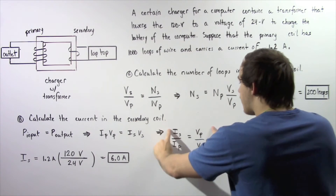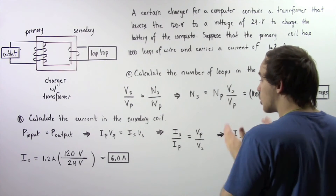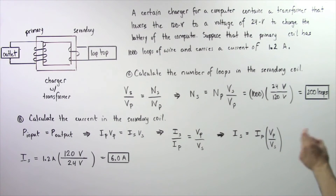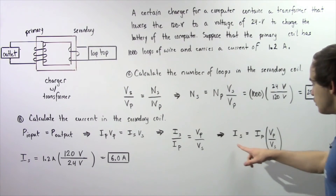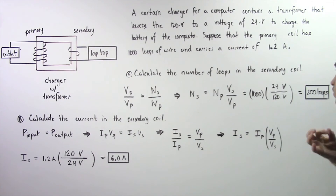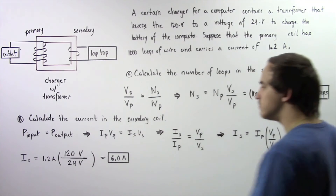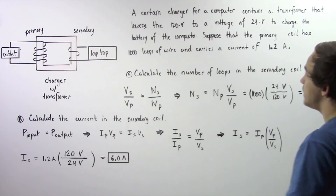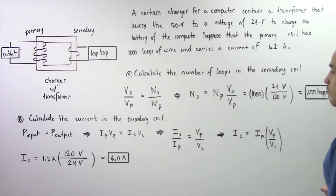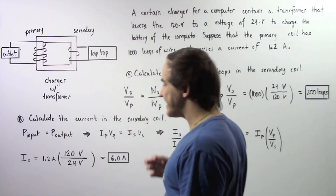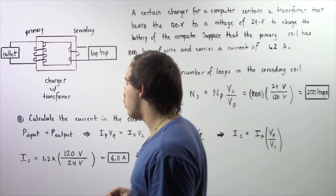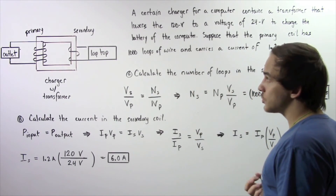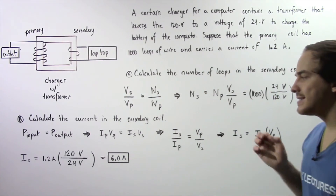Rearranging, we bring current to one side and voltage to the other to form a ratio, then solve for Is. The current in the secondary coil equals the current in the primary, 1.2 amps, multiplied by Vp divided by Vs — that is, 120 volts divided by 24 volts. 120 divided by 24 gives 5, and 5 times 1.2 amps gives us 6 amps. So the alternating electric current in our secondary coil is 6 amps.